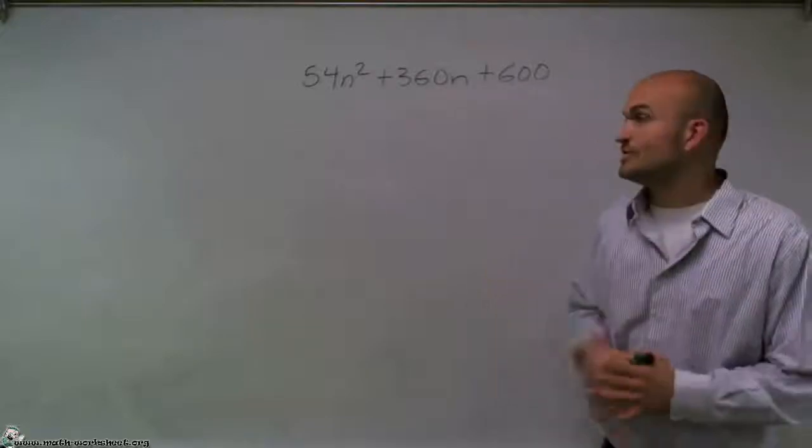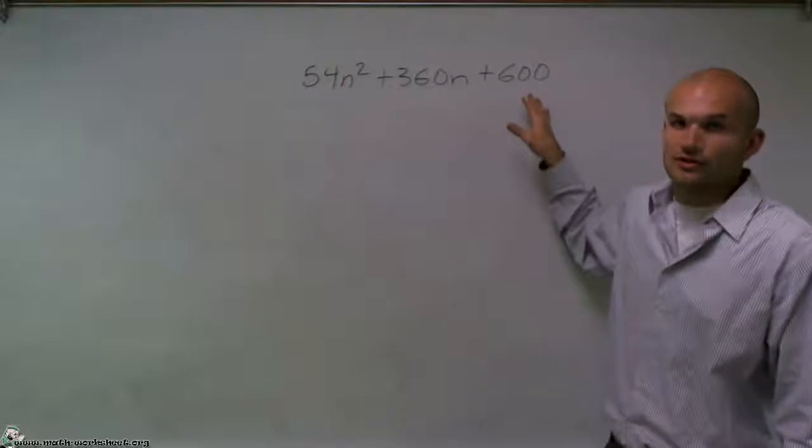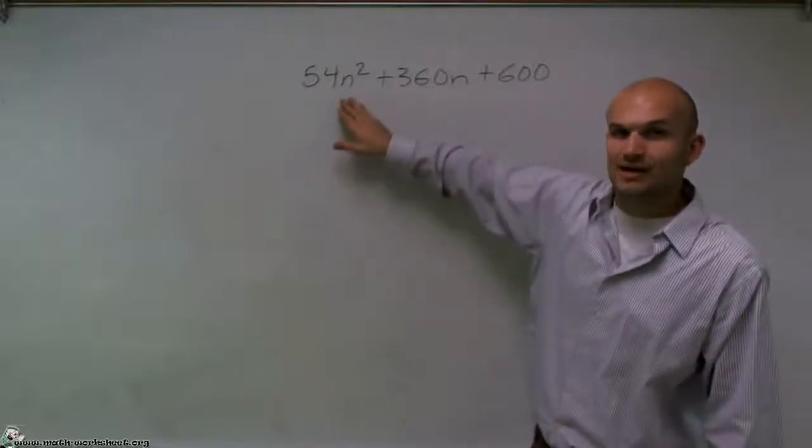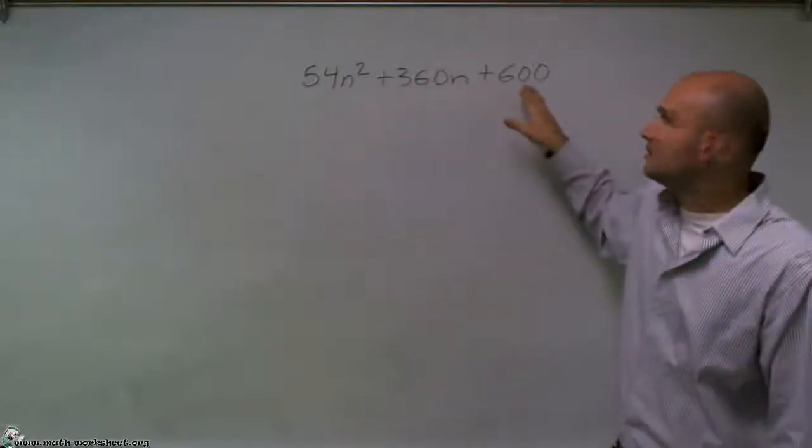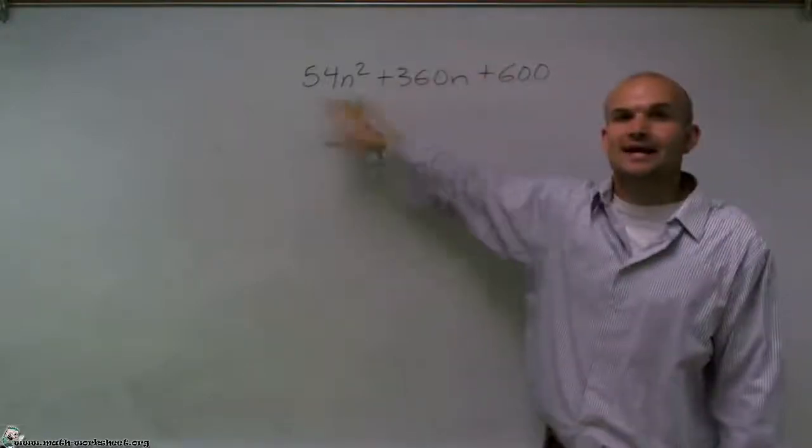So when you factor out your GCF, you've got to make sure that that number or variable goes into all three of our terms. If I look at my n here, I have an n squared, an n, but since 600, this term does not have an n, I can't factor an n out of this trinomial.